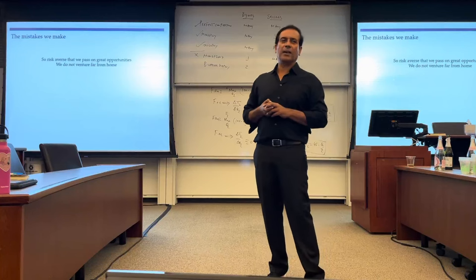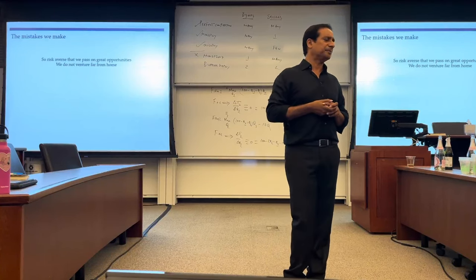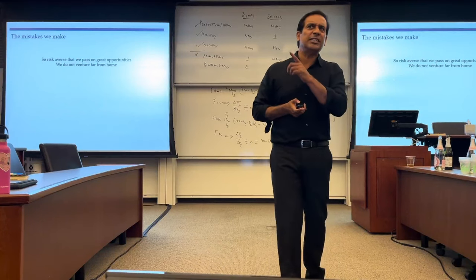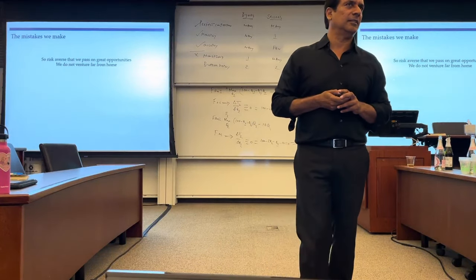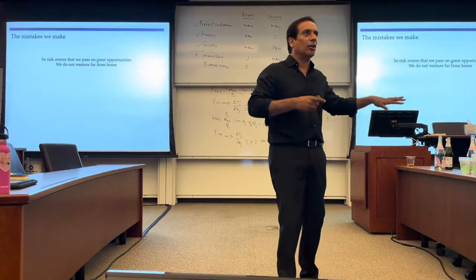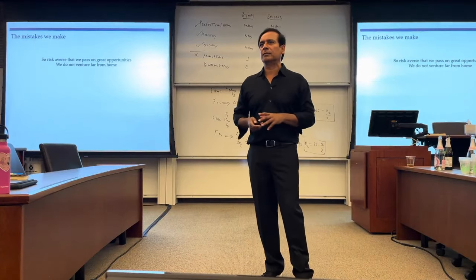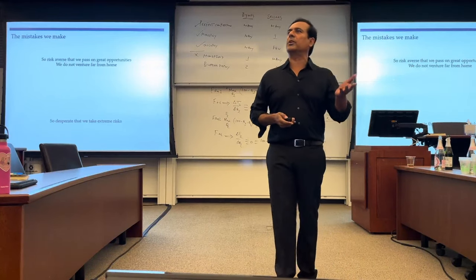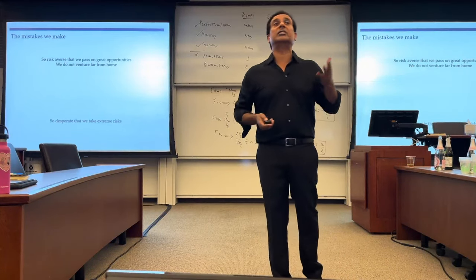The best example of this is someone who doesn't get out of bed, someone who doesn't venture too far from home because he or she is scared of getting into an accident. He's only seeing one side of the probability distribution. The other extreme is we are so desperate that we take extreme risks. This is a type 2 error.